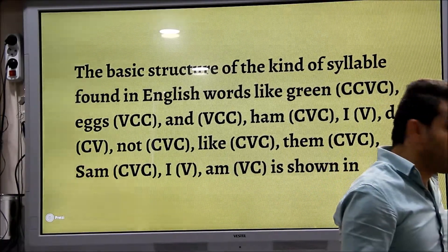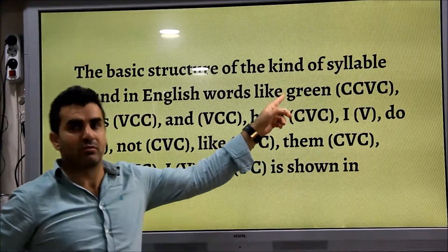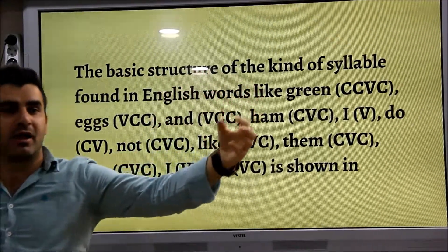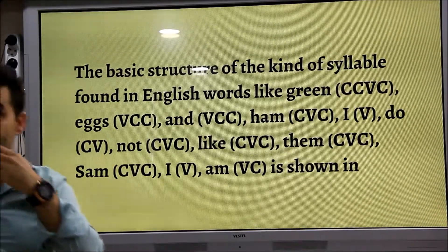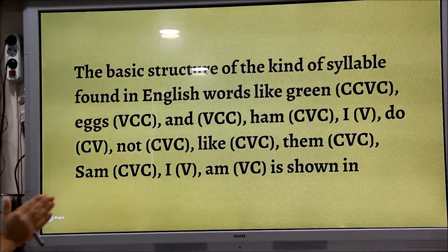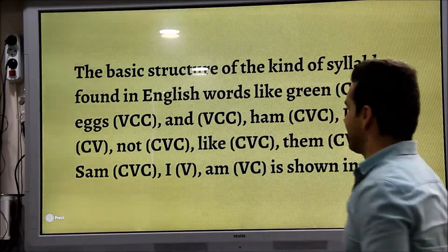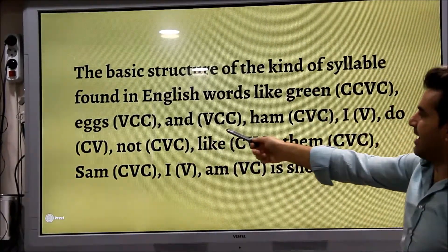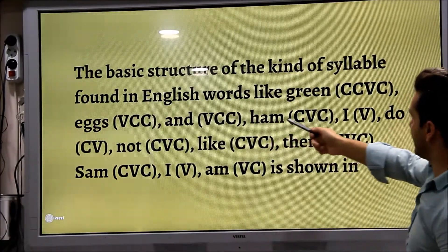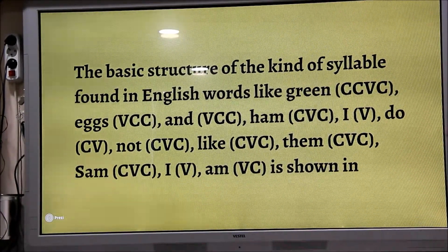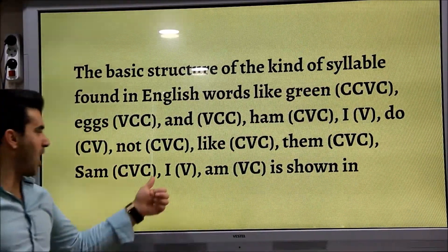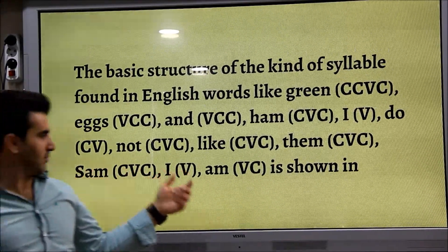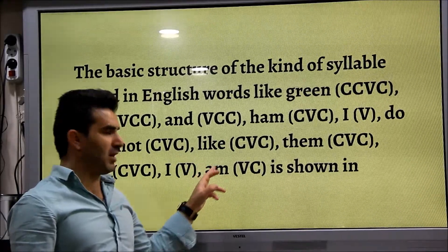Syllable consists of onset and rhyme. Onset is consonant; rhyme contains nucleus and coda. Nucleus is vowel, coda is consonant. For example, 'I love you' — 'I' is just one vowel, there is no consonant. 'Love' — consonant, vowel, consonant.